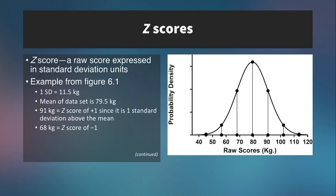Here we are with a normal curve showing the raw scores of body mass on the right side. Some things to know about this data set: the standard deviation is 11.5 kilograms and the mean is 79.5 kilograms. So how do we convert the raw scores into z-scores?